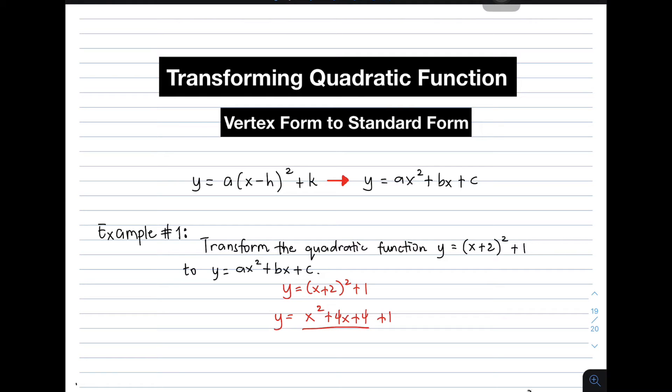Where did we get x squared plus 4x plus 4? We know that when you multiply x plus 2 times x plus 2, that will give you x squared. x times 2 gives you 2x, and 2 times x gives you 2x. Then 2 times 2 is plus 4. When you simplify it, that is x squared plus 4x plus 4.